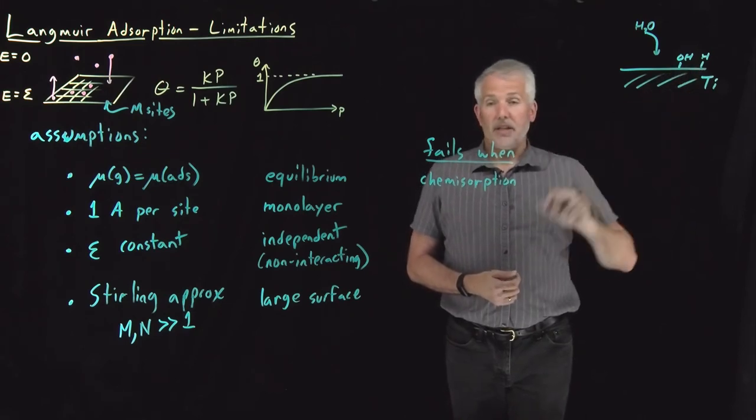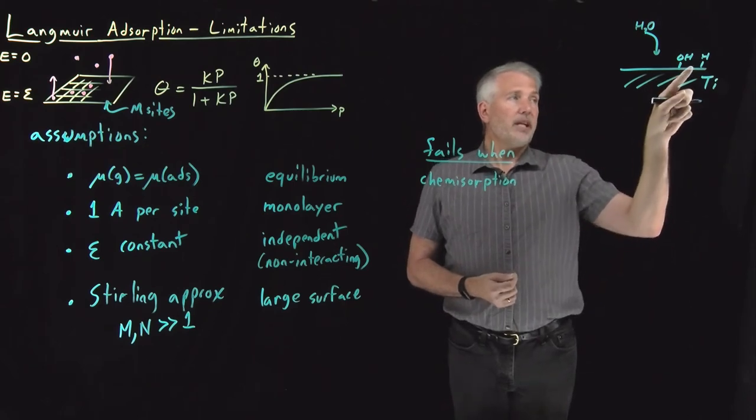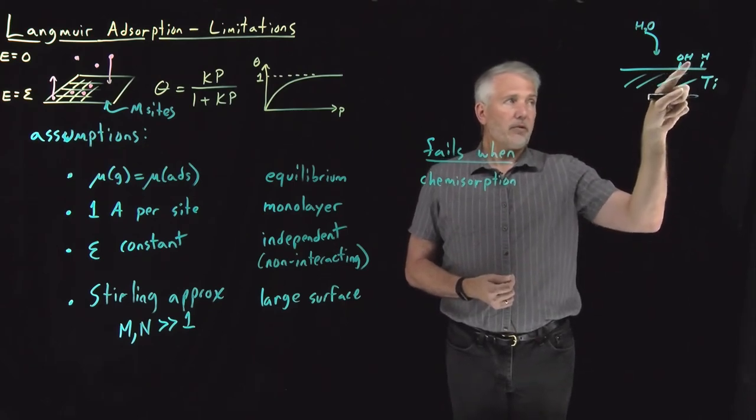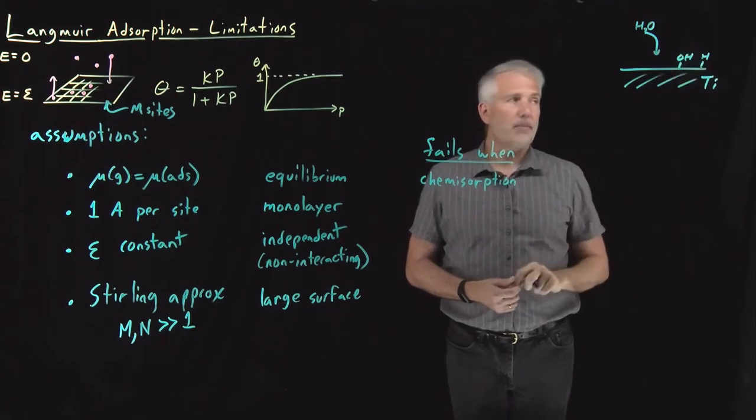Number one, that process is much less reversible. That's a more irreversible process. And number two, even if the process were reversible, this OH and this H stay next to each other, the reverse process can happen.